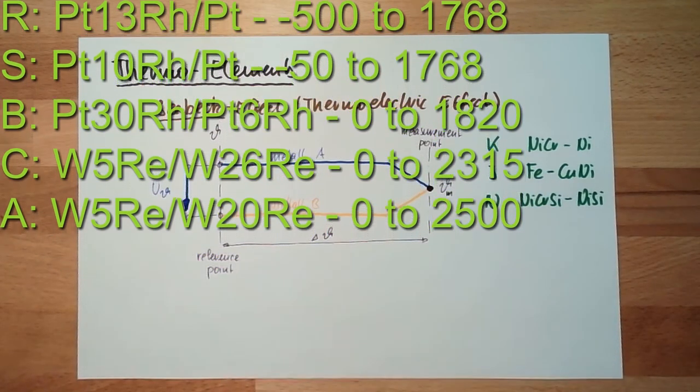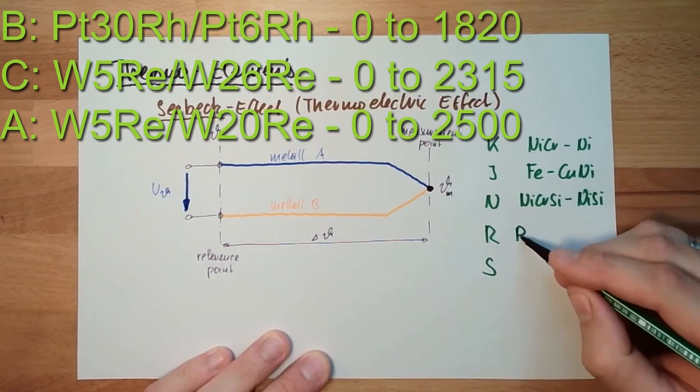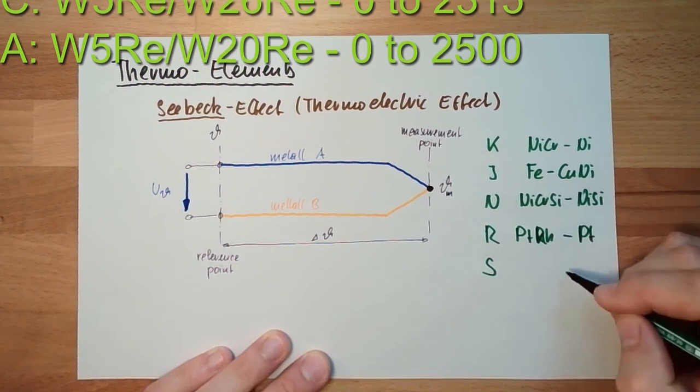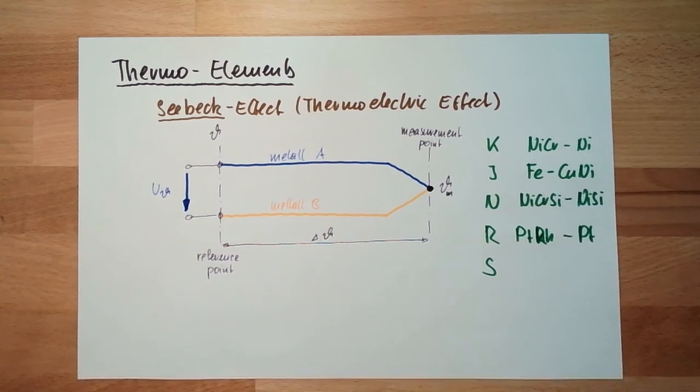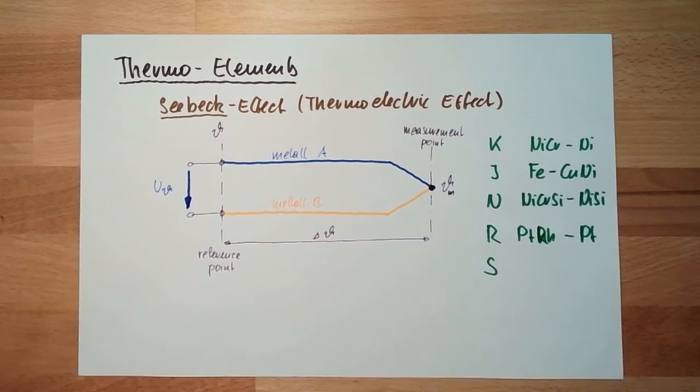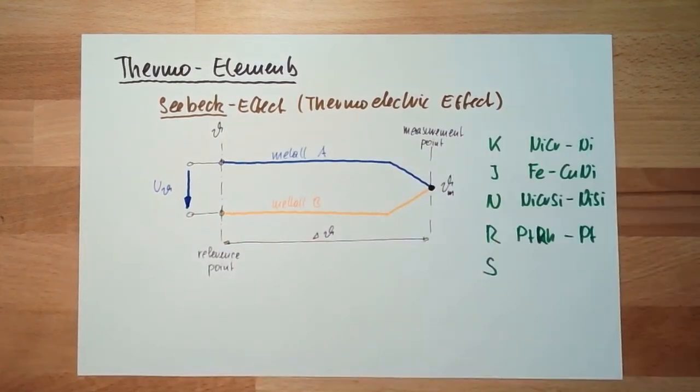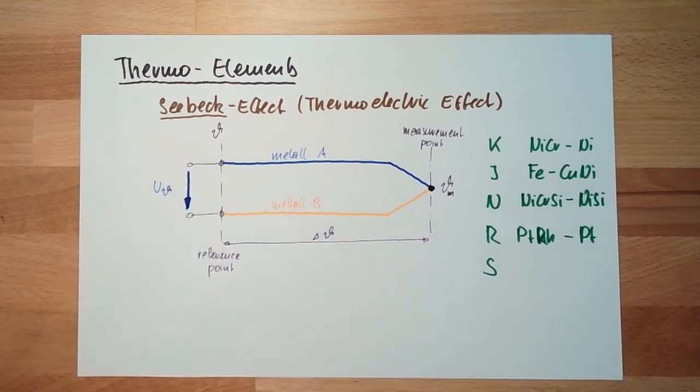These are the most common ones - K, J, and N. But there is also platinum, so there is type R and type S - platinum-rhodium, rhodium-platinum. There are different types, they are defined differently. In your script, you have a list of them. You don't need to know this from the top of your head, but please keep in mind there are different types of thermoelements, and you have to select one according to your temperature range. So that's one thing - the metal combination.